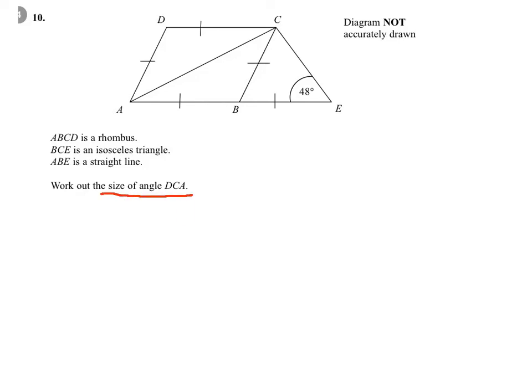We need to work out the size of angle DCA, this angle here, which is equal to this angle here, because the two lines in a rhombus are parallel, so these two are alternate angles.